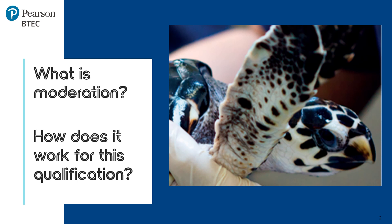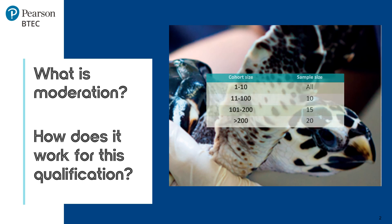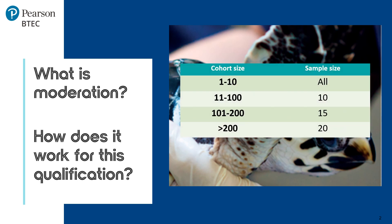The sample should include the learner who has the highest overall mark for the component and the learner with the lowest overall mark. The number of learners selected for the sample will depend on the cohort size, as shown on the table on the screen.